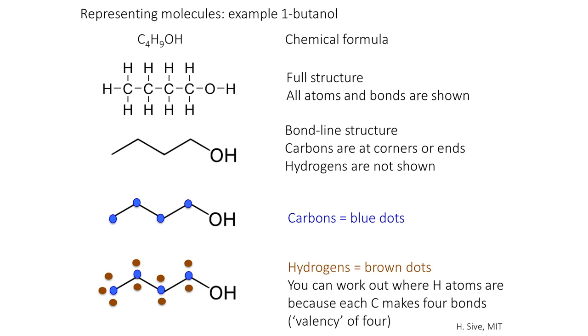I'm showing you here five different schematics of the same molecule. The molecule is butanol. It's called 1-butanol, a particular form of butanol, which is an alcohol.